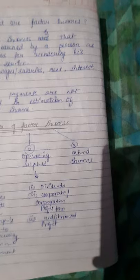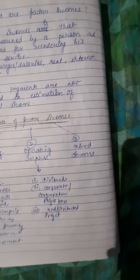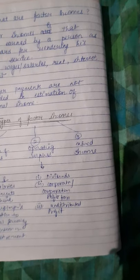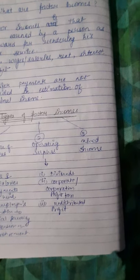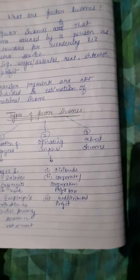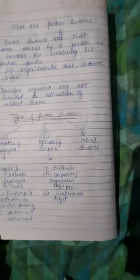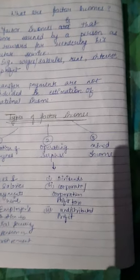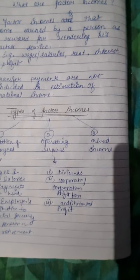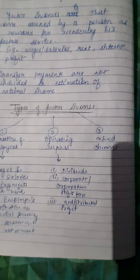Mixed Income refers to the income of self-employed persons who use their own labor, land, capital, and entrepreneurship in their household enterprise. This income is a mixture of wages, rent, interest, and profit — that is why it is called mixed income. Separate estimation of wages, rent, interest, and profit is not possible because the factors of production are not hired or purchased from the market. The sum total of factor income generated within the domestic territory of a country is called Domestic Product at Factor Cost, or Domestic Income.